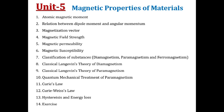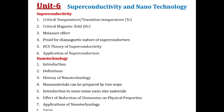Unit 6 is classified into two parts: the first part is Superconductivity and the second part is Nanotechnology. The contents of Superconductivity include: critical temperature or transition temperature represented as Tc, critical magnetic field represented as Hc, and the nature of superconductivity. The contents of Nanotechnology include: introduction, definition, history of nanotechnology, methods of preparing nanomaterials, introduction to some nanosized materials, effect of reduction of dimensions on physical properties, and applications of nanotechnology, followed by an exercise covering both parts.